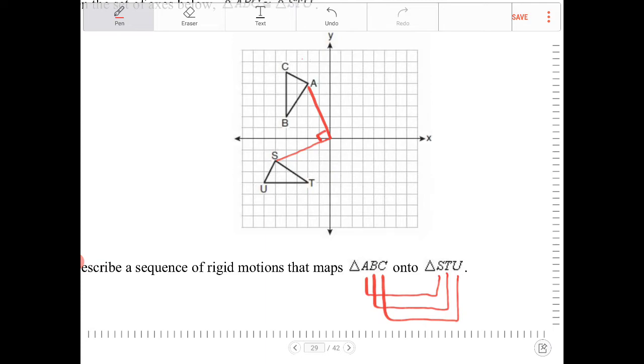The coordinates of A is negative 2 comma 5. This coordinate for S is negative 5 comma negative 2.